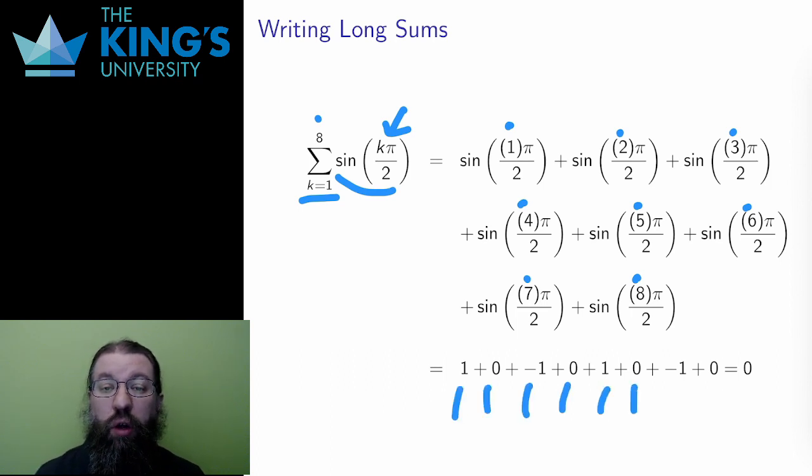Then I can evaluate all of these expressions using a unit circle diagram. They are all multiples of a quarter turn, and evaluate 1, negative 1, or 0. In this case, the whole sum adds up to 0. That's the idea of sigma notation.